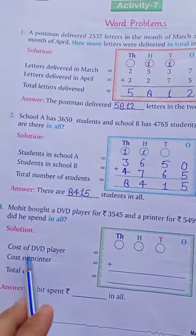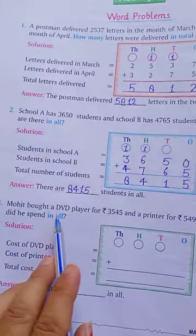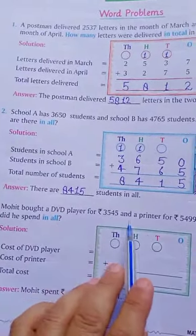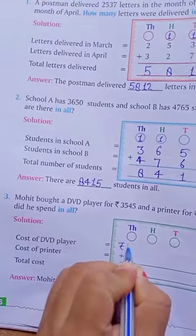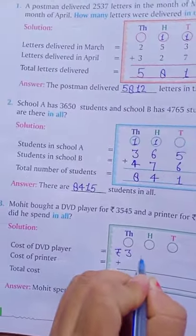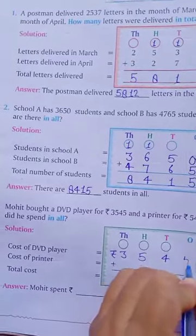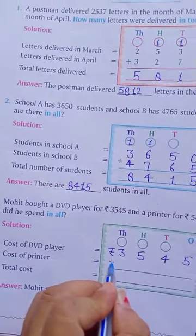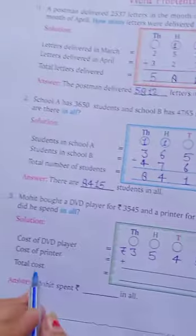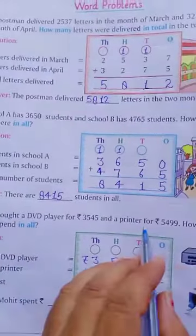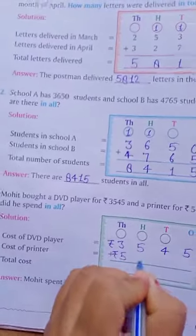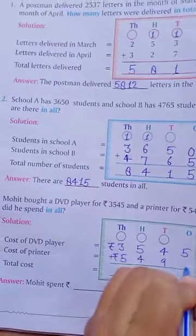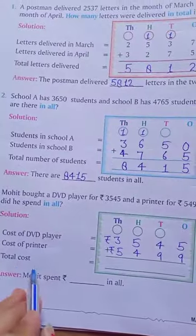Now, in solution, cost of DVD player. What is the cost of DVD player? 3,545. So, write here, 3,545. Okay. And here write the rupees sign. And, cost of printer. Cost of printer is rupees 5,499.